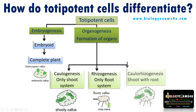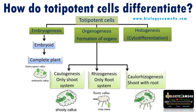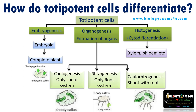If both shoots and roots are formed within a callus, it is called caulo-rhizogenesis. The third way is that totipotent cells sometimes differentiate to form vascular elements — a process called cytodifferentiation or histogenesis — forming vascular tissues xylem and phloem.